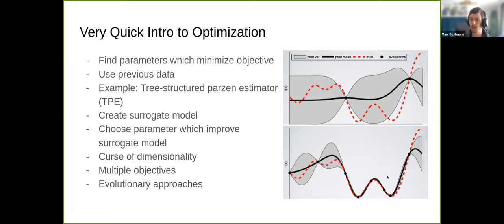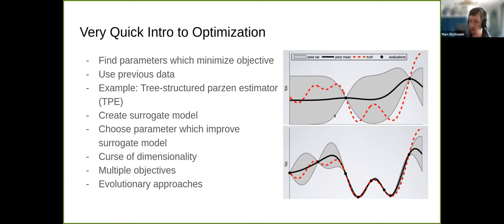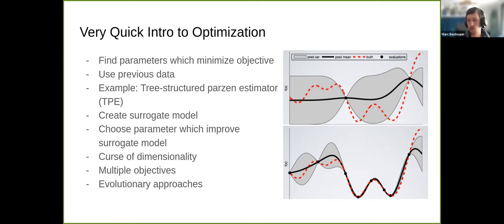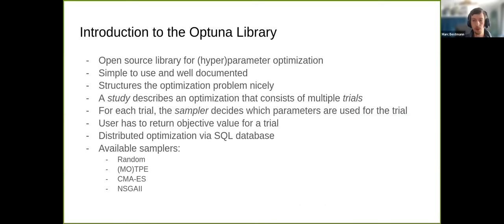This is simple in one dimension, but we typically have many parameters, which brings the curse of dimensionality — optimizing in a high-dimensional space grows in complexity with each additional parameter. Very often we also have multiple objective values: for walking we want to walk forward and sideward; for a kick we want both distance and correct direction. This is called multi-objective optimization, and there are approaches like the multi-objective TPE to handle it.